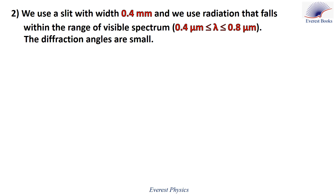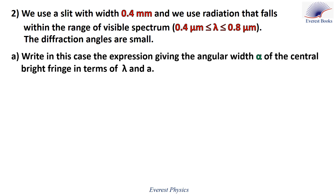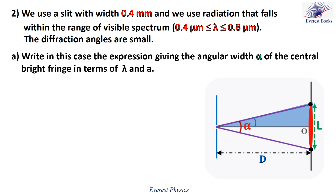For part two, we use a slit with width 0.4 millimeters and radiation within the range of the visible spectrum, which is between 0.4 micrometers and 0.8 micrometers. The diffraction angles are small. Write the expression giving the angular width alpha of the central bright fringe in terms of lambda and a. As shown in the figure, alpha is the angular width of the central bright fringe — the angle through which the central bright fringe is seen from the slit.